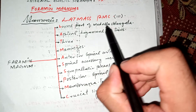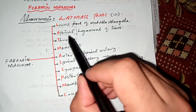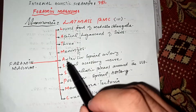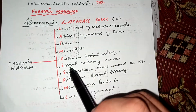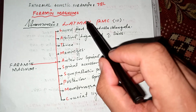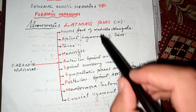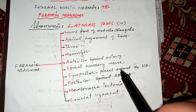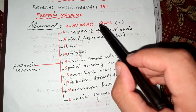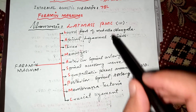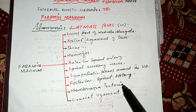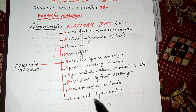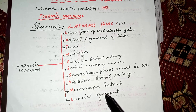In the mnemonic LATMS PMC: L for the lowest part of the medulla oblongata, A for the apical ligament of dens, T for the tectorial membrane, M for the three meninges, A for the anterior spinal artery, S for the spinal accessory nerve, another S for the sympathetic plexus around the vertebral artery, V for the posterior spinal artery, M for the membrana tectoria, and C for the cruciate ligament.